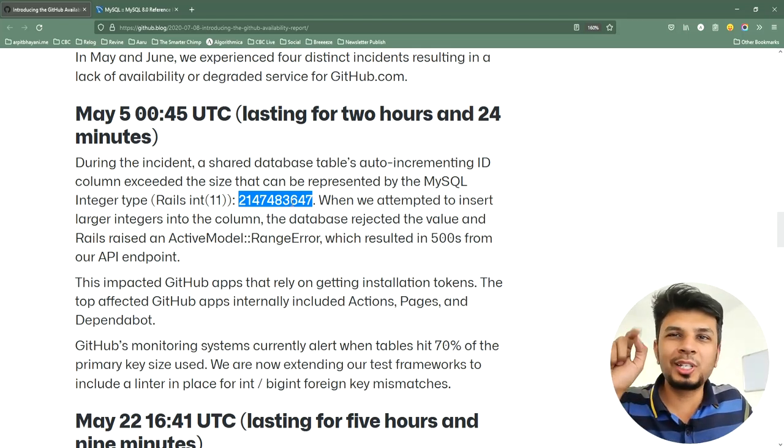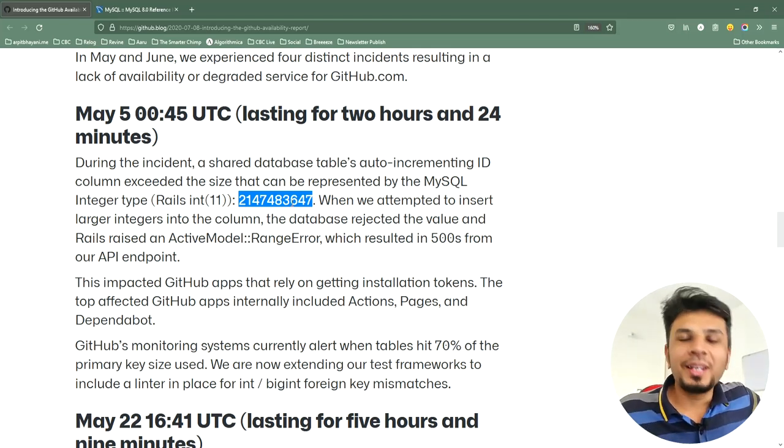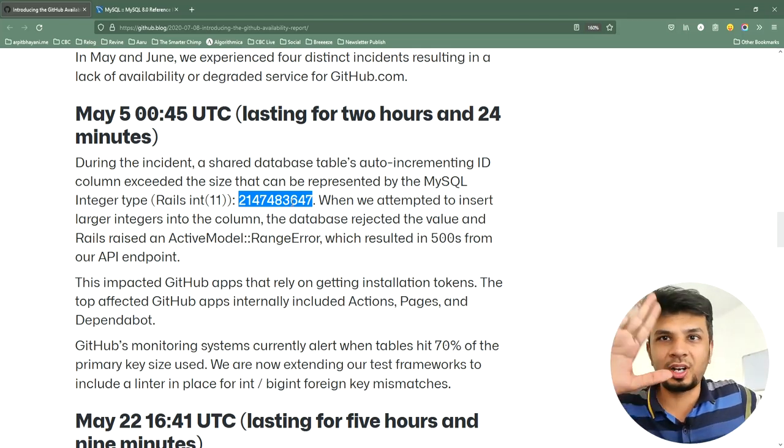And obviously everything has a limit. MySQL integer type has a limit of 2,147,483,647. This is nothing but 2 raised to power 31 minus 1, nothing fancy.